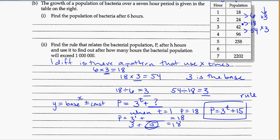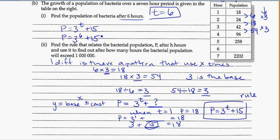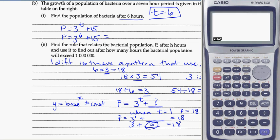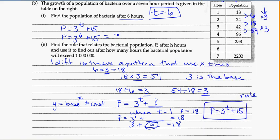We can now use this rule. 6 hours means t equals 6. Using substitution, p equals 3 to the 6 plus 15. Enter that into the calculator using the hat key for 'to the power of.' We get 744. So 744 is the answer for the population after 6 hours.